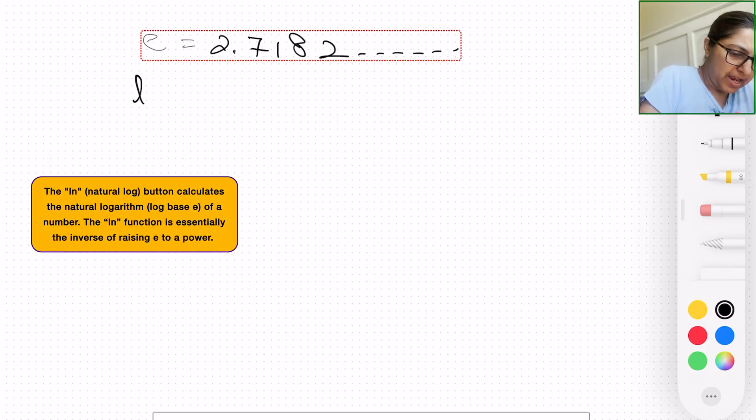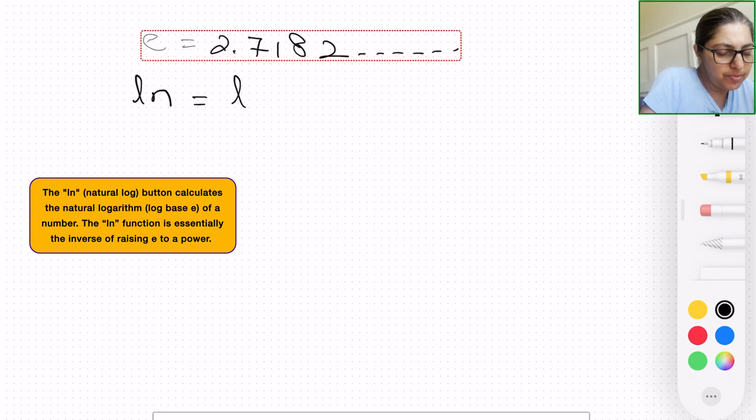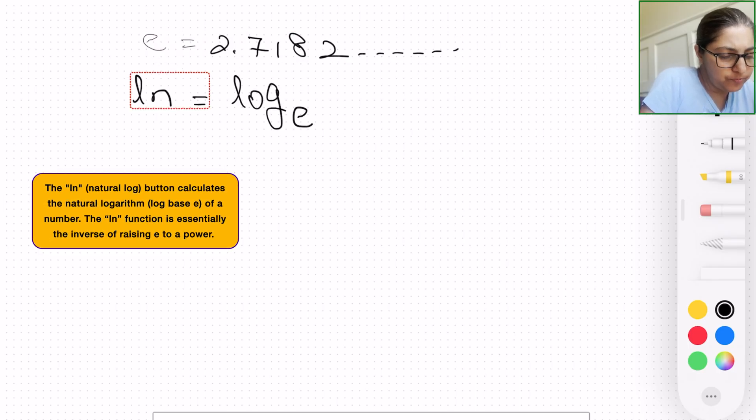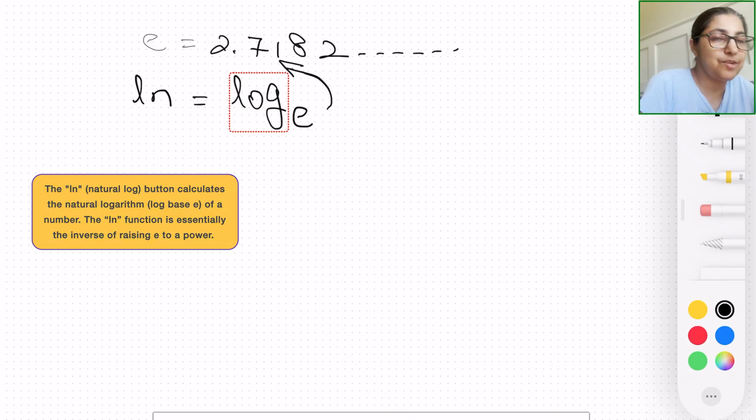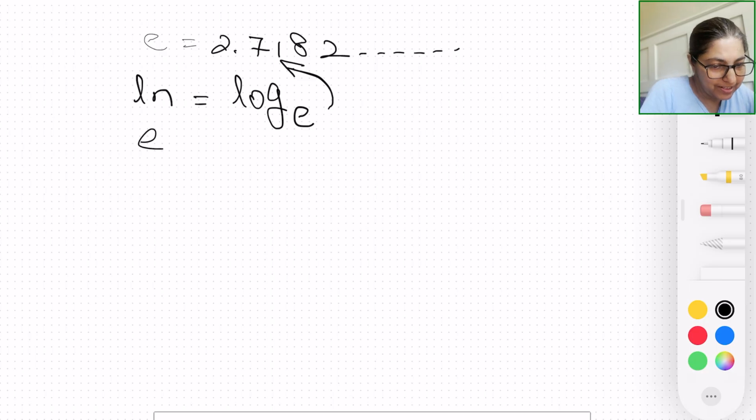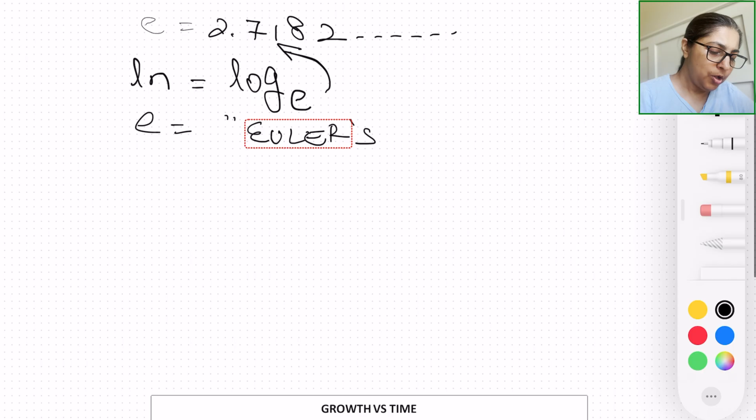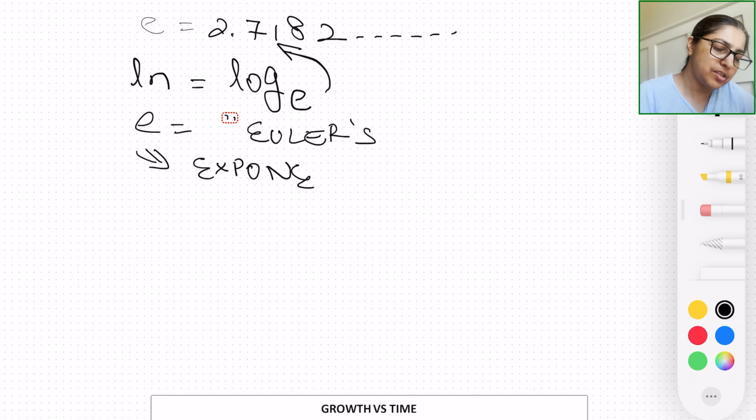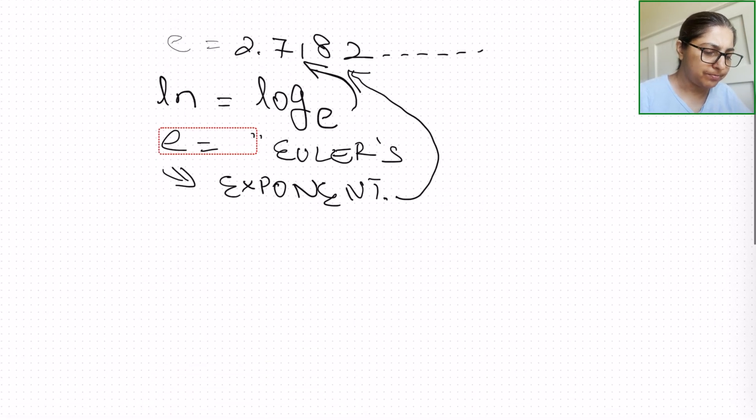It keeps going on as a non-terminating decimal. Also there is a connection between the natural log button ln and e value. This is nothing but your standard logarithm but the value of the base is going to be e value. Also, e is referred to as Euler's number. Why? Because Euler was a scientist who came up with the refinement of the value of e, although e actually refers to exponent. But the question still remains, how do we get to 2.7182?